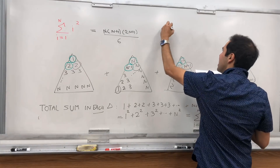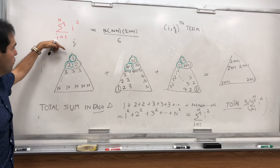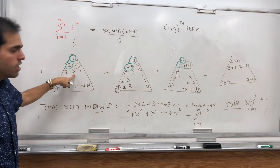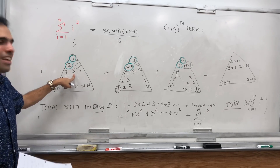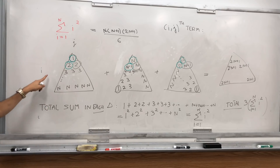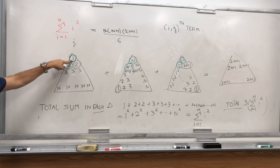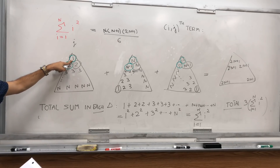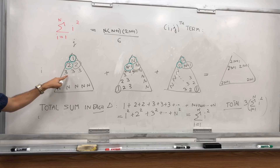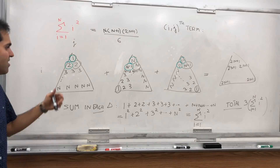To verify this, let's find the ij-th entry in each triangle — meaning the entry in row i and column j. For the first triangle, it just depends on which row we are in. In row 1, all entries are 1; in row 2, all entries are 2; in row 3, all entries are 3. So in row i, the ij-th entry is simply i.